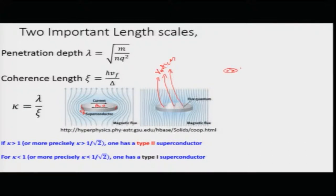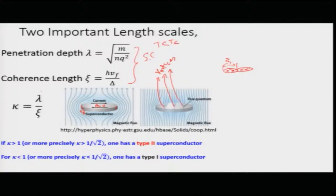The coherence length is the size of the Cooper pairs — the pair of electrons which are paired up. The typical size of each Cooper pair is the coherence length. These are two fundamental length scales associated with any superconductor once it gets into the superconducting state at T less than Tc. One defines an important parameter called kappa, which is the Ginzburg-Landau parameter.